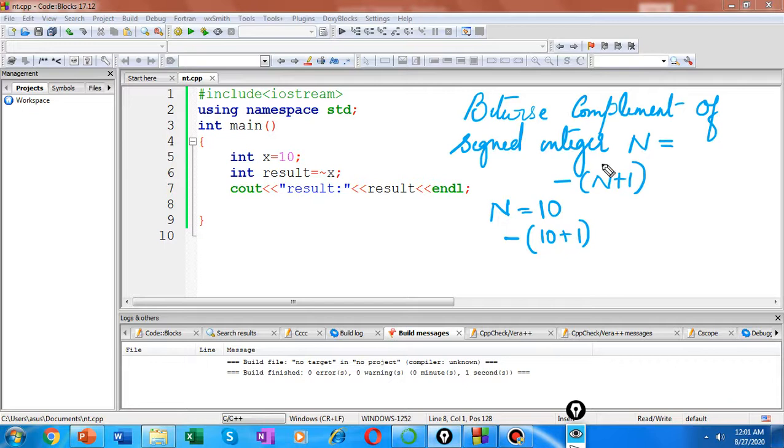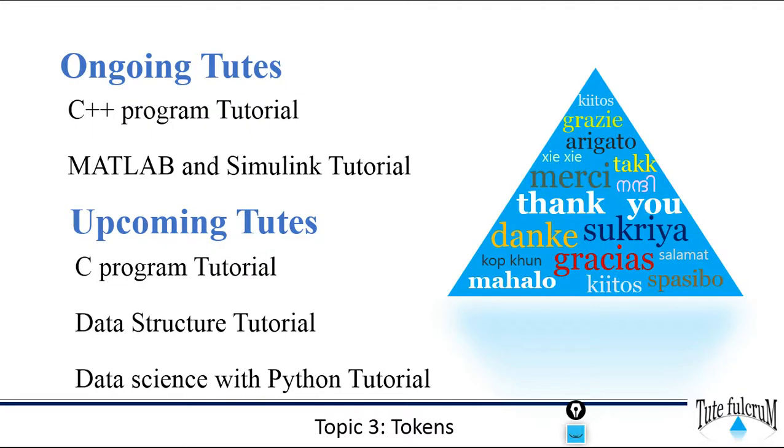So this is about the working of bitwise NOT operator in C++. Thank you so much for watching. Please do like, share, comment and subscribe. And please don't forget to tap the bell icon. You'll get notified whenever we upload our new videos. Thank you.